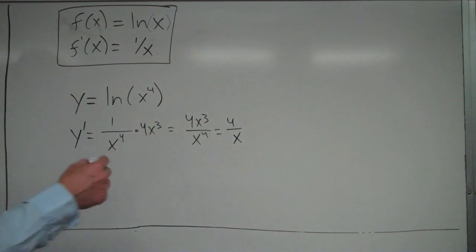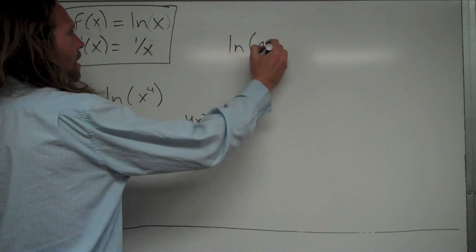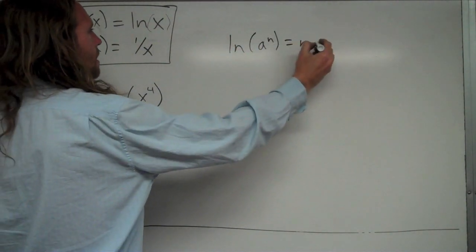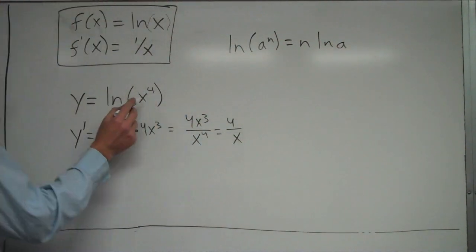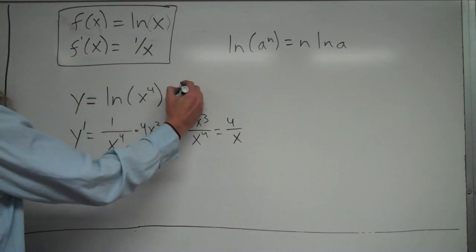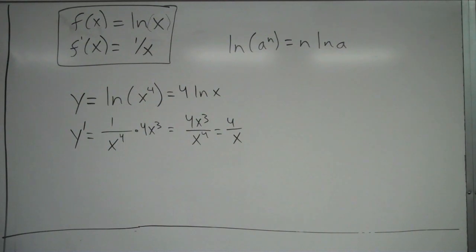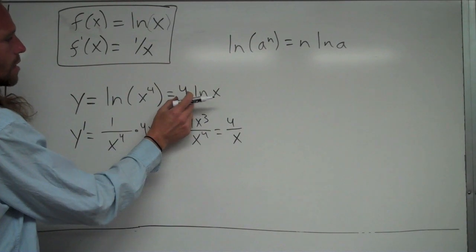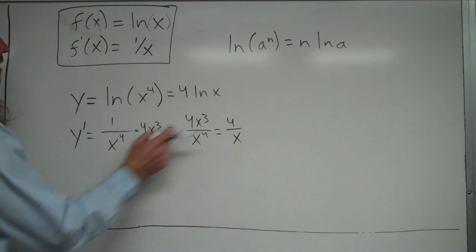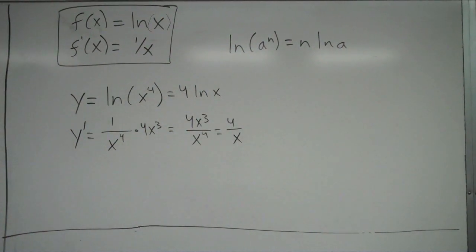Just FYI, in a prior video we talked about a rule that if you have natural log of a to the n, that's the same as n times natural log of a. So before taking the derivative, I could have rewritten natural log of x to the 4th by bringing the 4 down in front as 4 natural log of x, using a log property. Then the 4 is just a constant that goes along for the ride, the derivative of natural log of x is 1 over x, giving 4 over x — the same answer either way.